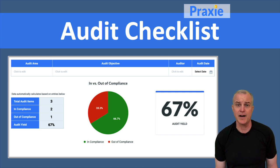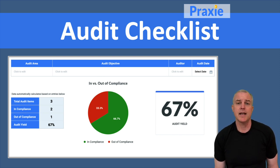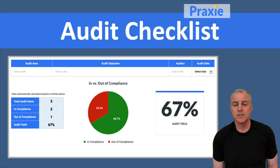You can even quantify the results — listing the number in compliance, the number out of compliance, and how many things you observed. You can actually quantify that and create what's known as an audit yield percentage. So you can get pretty advanced with this.